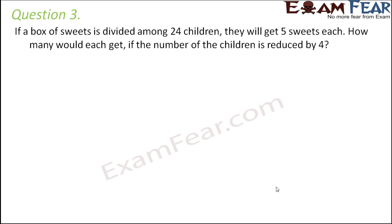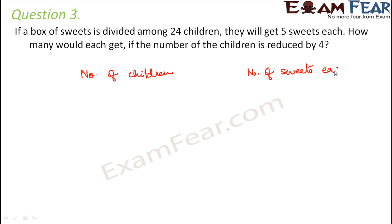Question 3: if a box of sweets is divided among 24 children they will get five sweets each, how many would each get if the number of children is reduced by 4? Here we are dealing with two quantities: the number of children and the number of sweets each gets. As the number of children increases, the number of sweets each gets decreases, so number of children is inversely proportional to the number of sweets each child gets.